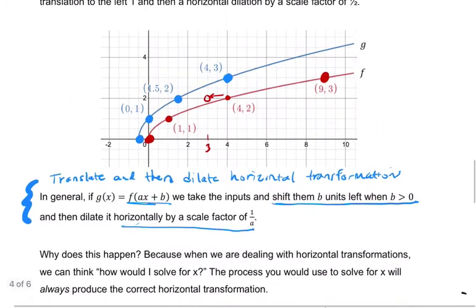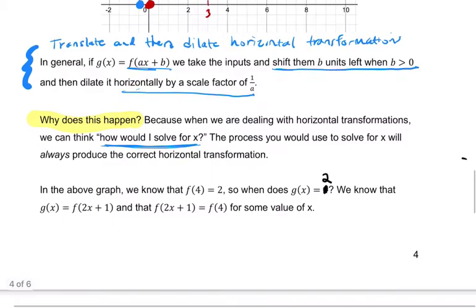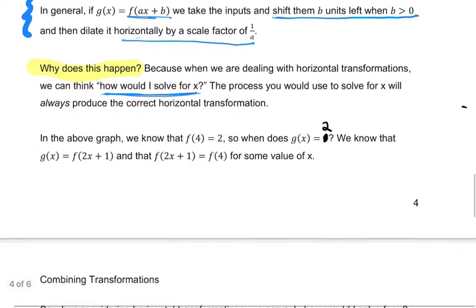But why does this happen? We can see it happening. What's going on? So one thing I found helpful is when we're dealing with horizontal transformations, you can think of this question: how would I solve for x? And all the steps you would use to solve for x are exactly the things you'll be doing to each point in terms of horizontal transformations. Everything you do to solve for x tells you how to transform your function horizontally.